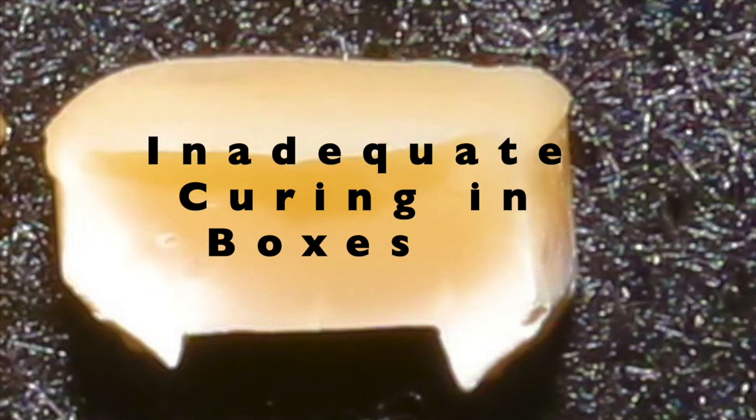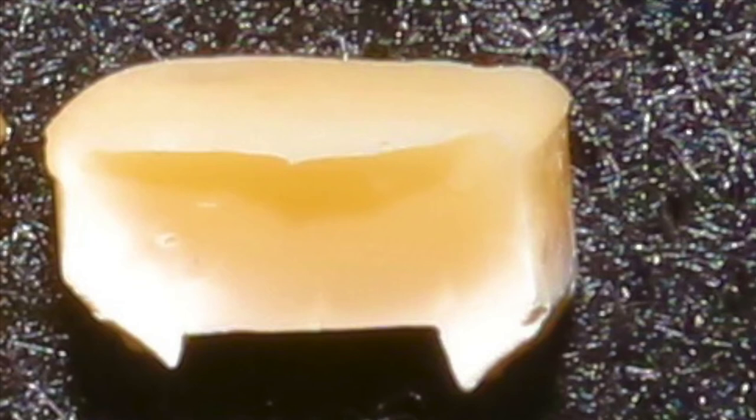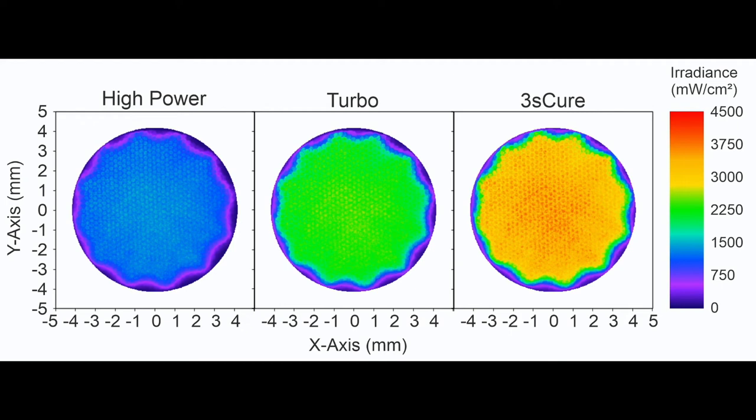If such a composite is put into a solvent, the solvent will quickly remove the uncured or partially cured composite that is in the proximal boxes. This is a very simple but impactful demonstration of the importance of having a uniform beam profile, such as you see in these images here, where the output from the same curing light was being profiled on three different output settings. As you can see, there's no difference in the uniformity — only the irradiance increases.